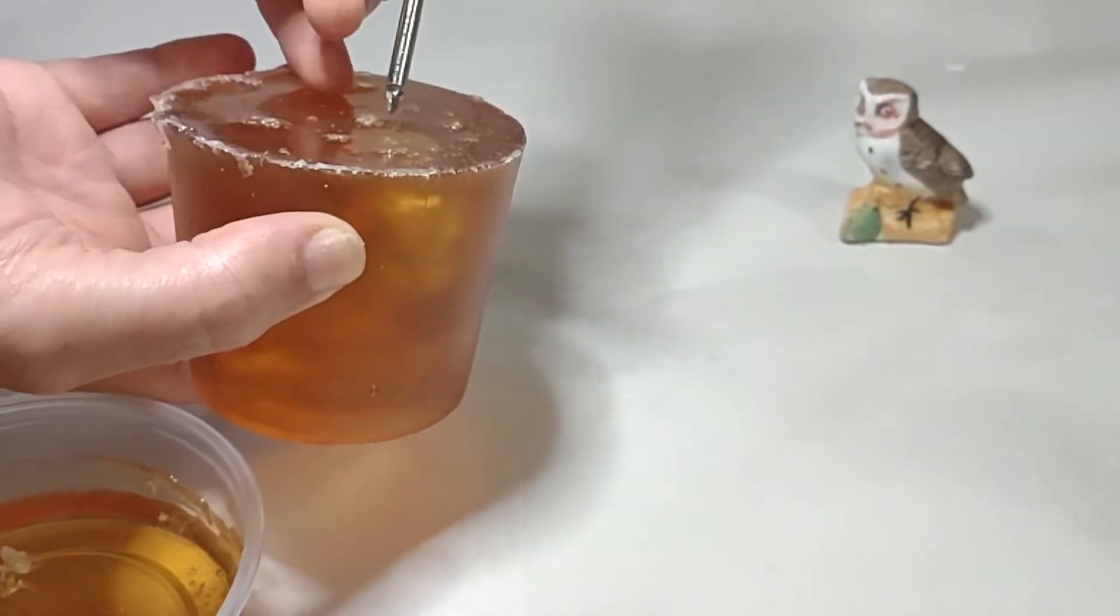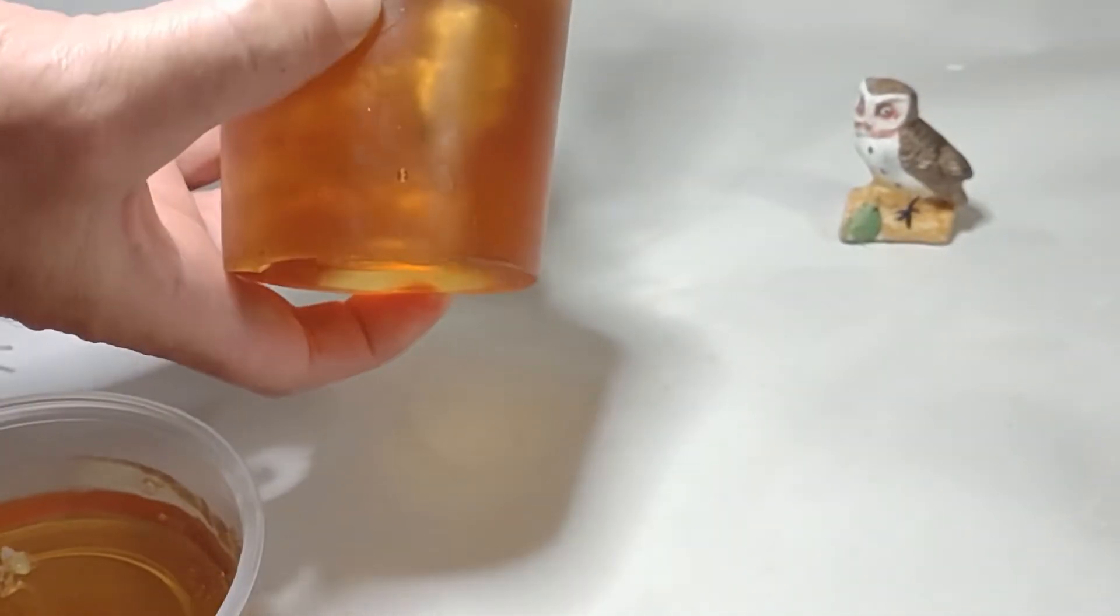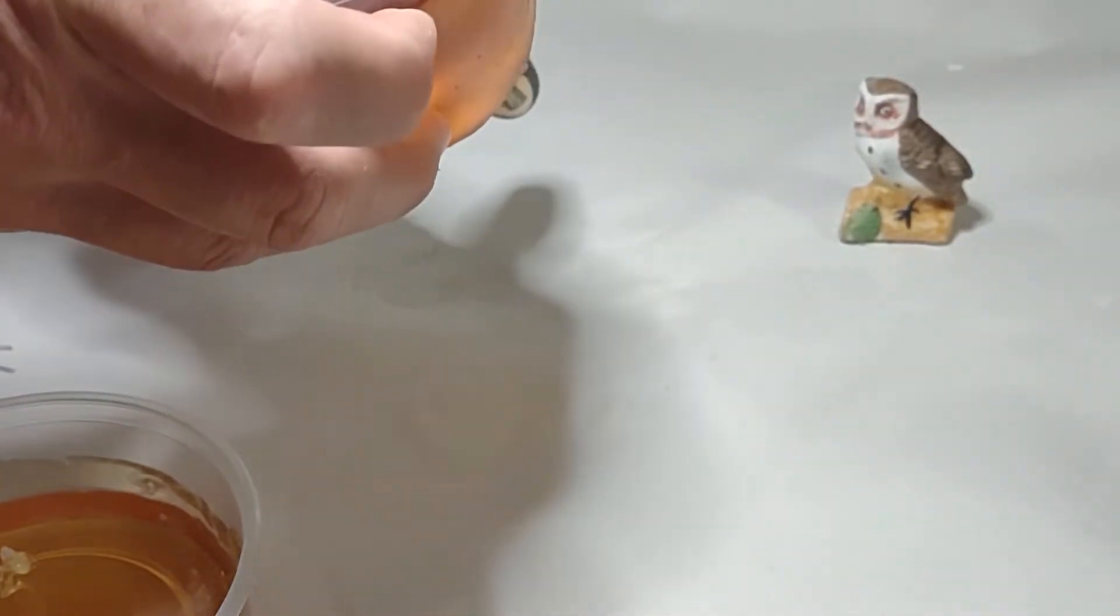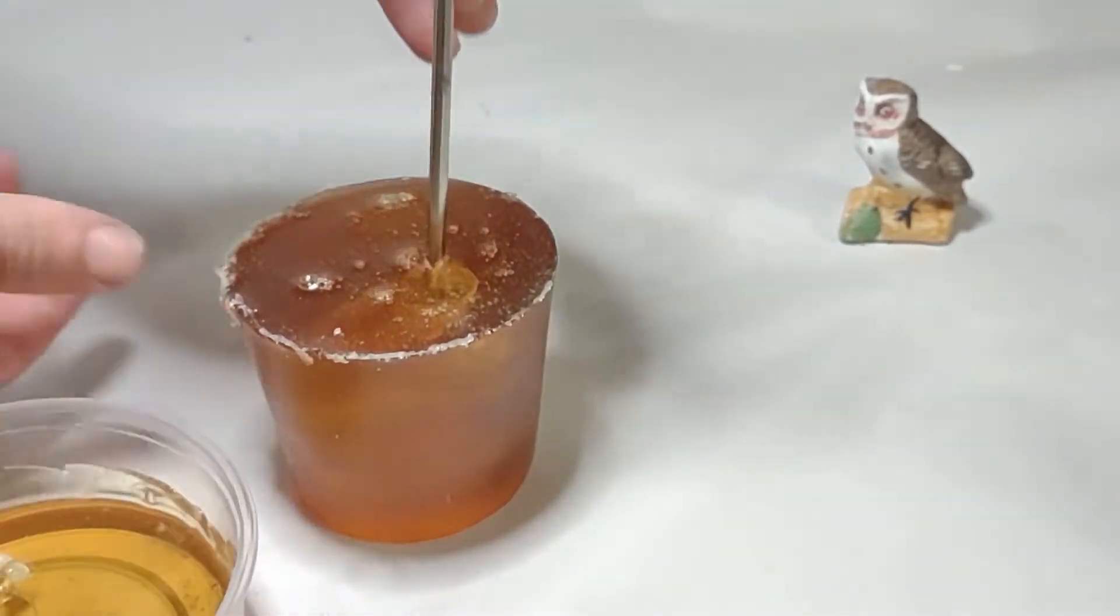Since this is a candle we need to make room for the wick. So I am going to use any pokey thing, in this case a Phillips screwdriver to poke a hole into the top of the owl's head so I can make room for the wick.